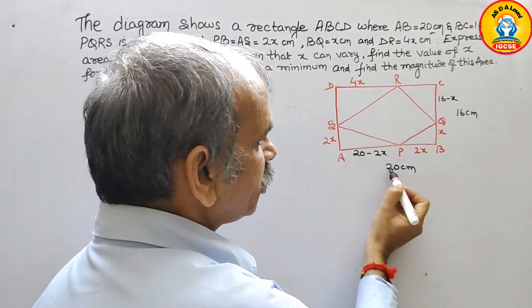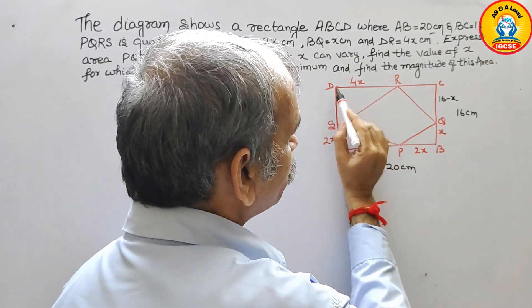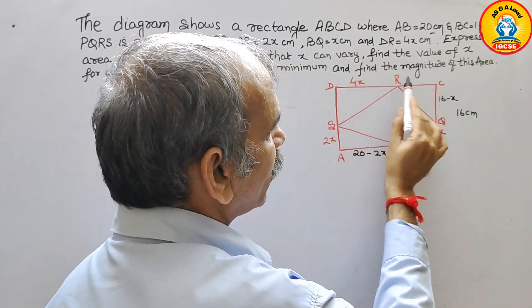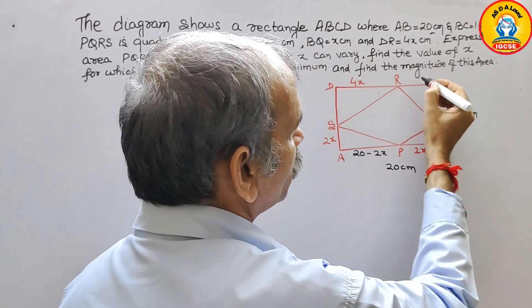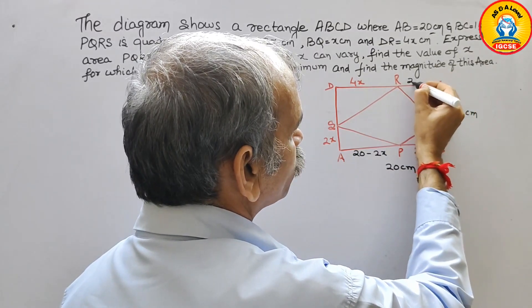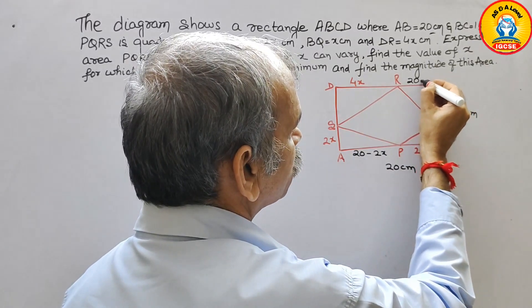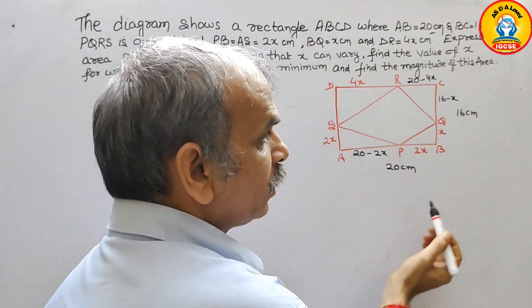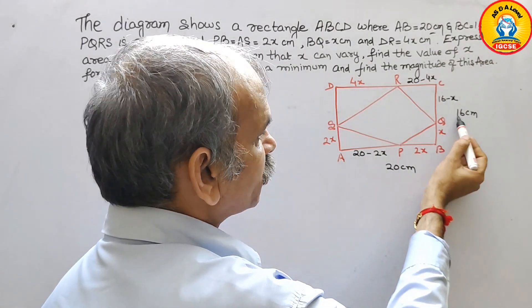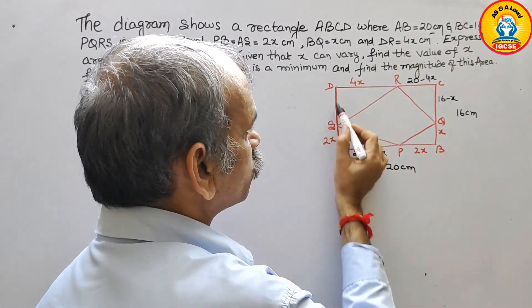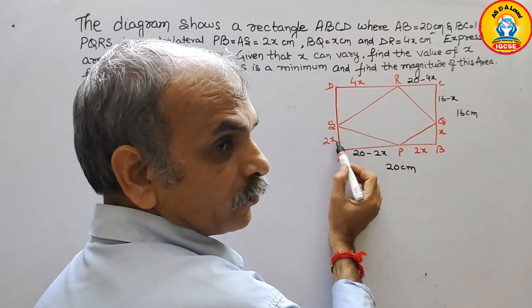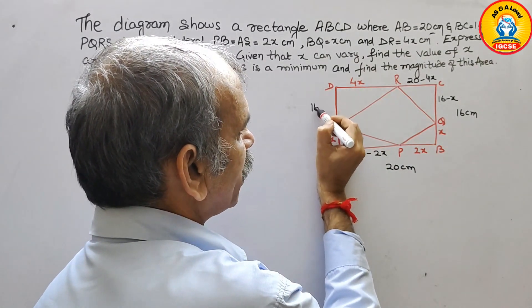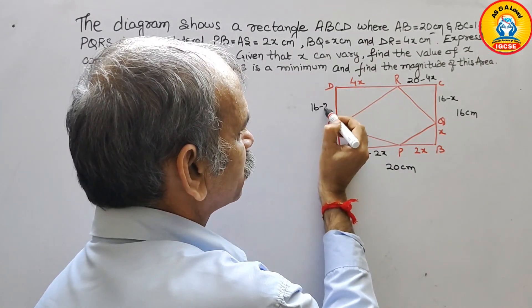CD is also 20. DR is 4x, so the remaining part RC is 20 minus 4x. Since AD is 16 and AS is 2x, the remaining part SD is 16 minus 2x.